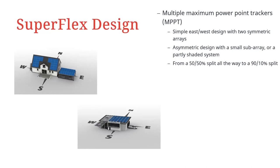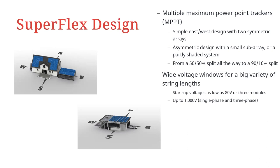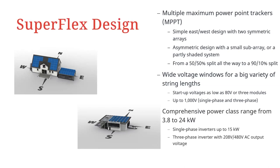The system may be split among the independent trackers as needed — from a 50/50 split all the way to a 90/10 split in terms of power. With the Fronius SuperFlex design, you can design systems from incredibly low startup voltages as low as 80 volts or three modules, all the way up to the maximum DC voltage allowed by NEC code. The Primo single-phase inverter can handle up to 1000 volts in non-residential applications, allowing for a maximum number of modules in one string and a reduced balance of system cost.